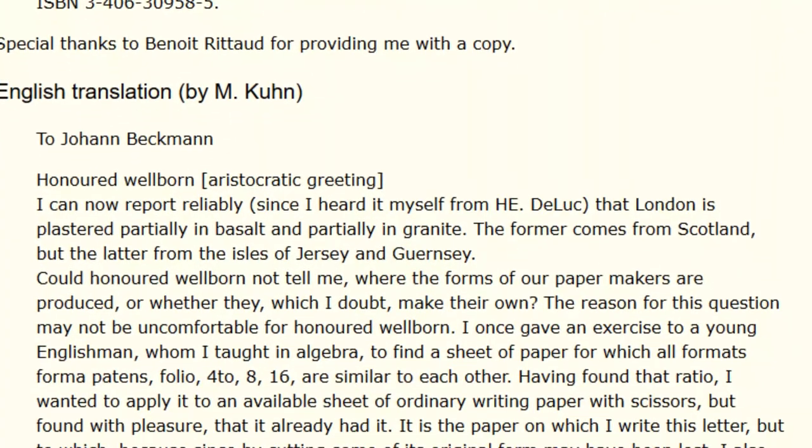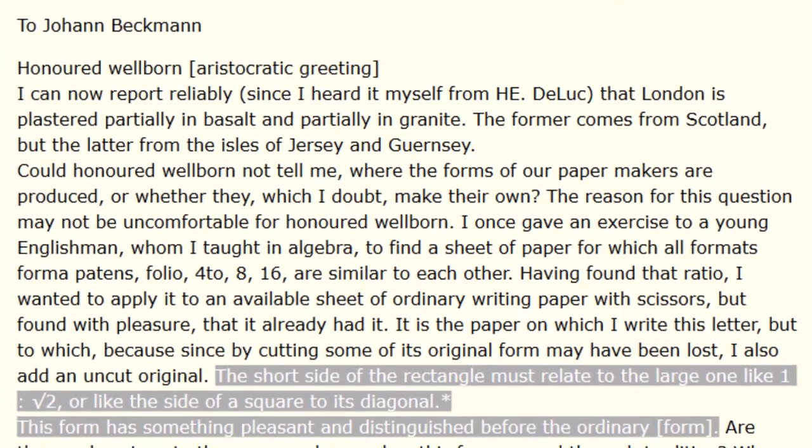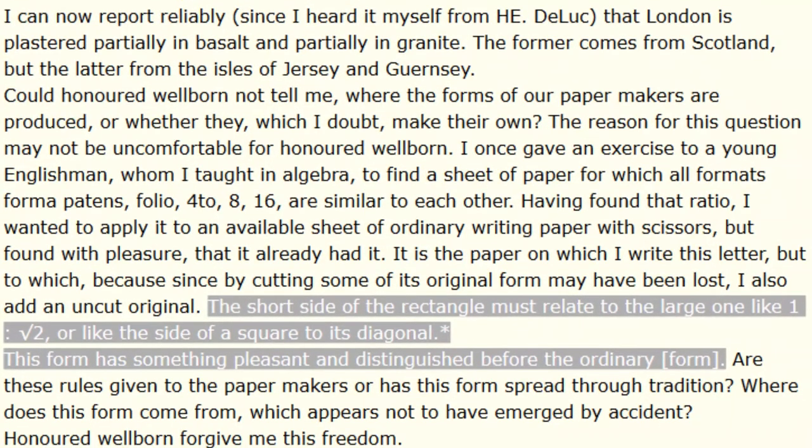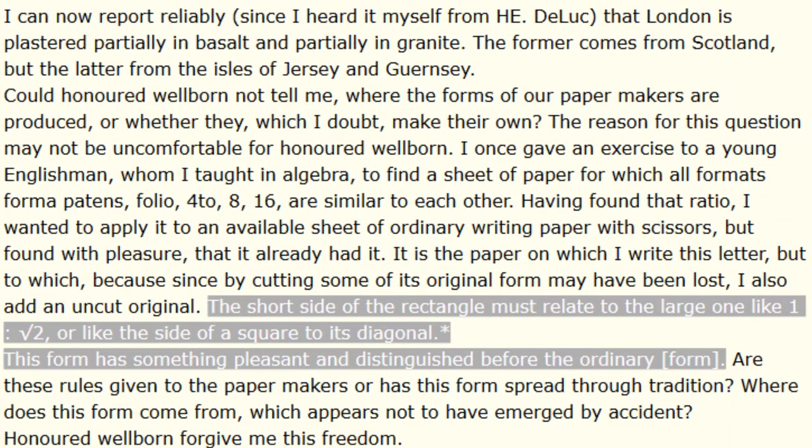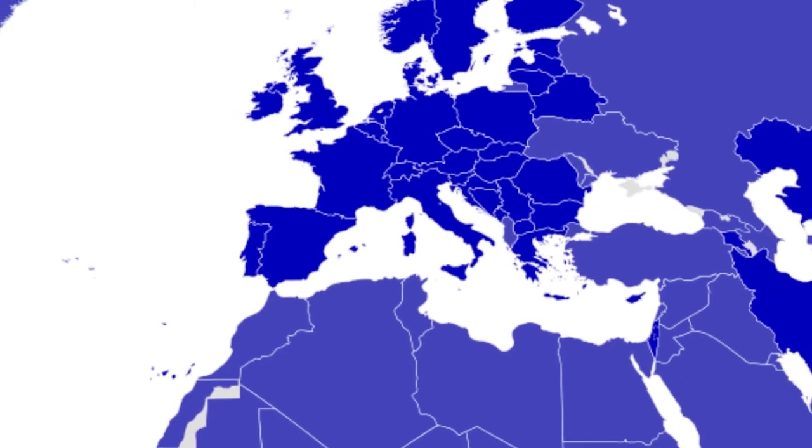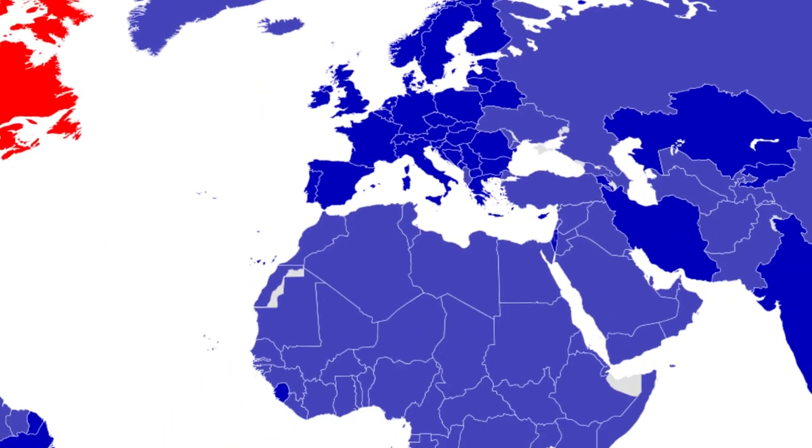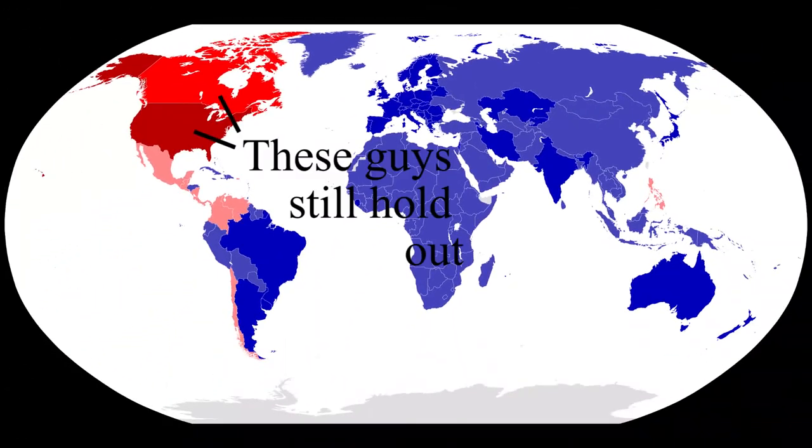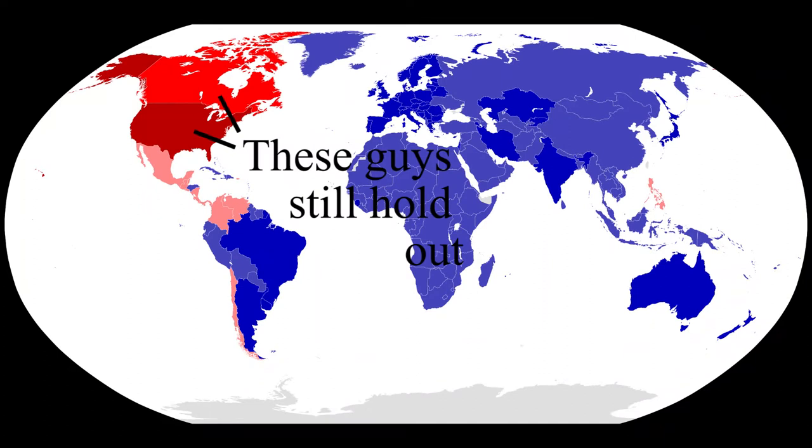The German scientist George Christoph Lichtenberg proposed the use of paper sizes with the aspect ratio of root 2 back in 1786. In the following decades, papers using this ratio of length to breadth became quite popular in France and Germany, and spread to the rest of the world. It therefore became the international standard, and even the United Nations made it their official document format.